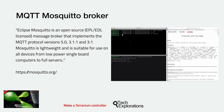Mosquitto is lightweight and is suitable for use on all devices from low-power single-board computers to full servers. MQTT is a messaging model that allows clients to talk to each other using the publish and subscribe model. There are many open-source implementations of the MQTT protocol, and any of them should work equally well in this project. I have chosen Mosquitto because it's well-documented and mature, and it also comes with convenient publish and subscribe tools that we can use for testing, apart from the broker itself.